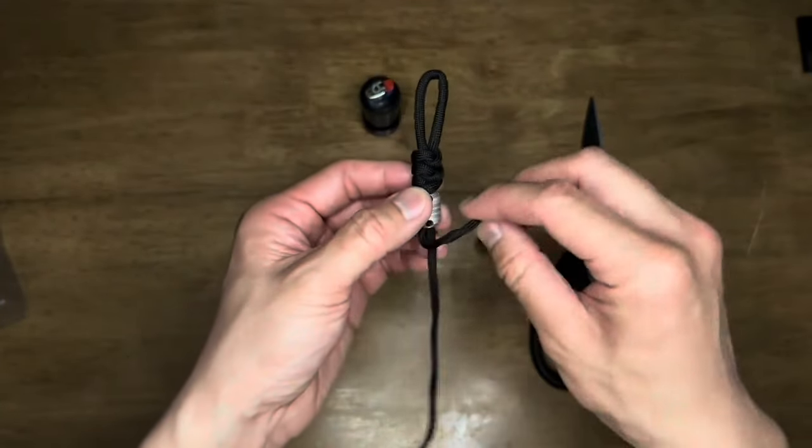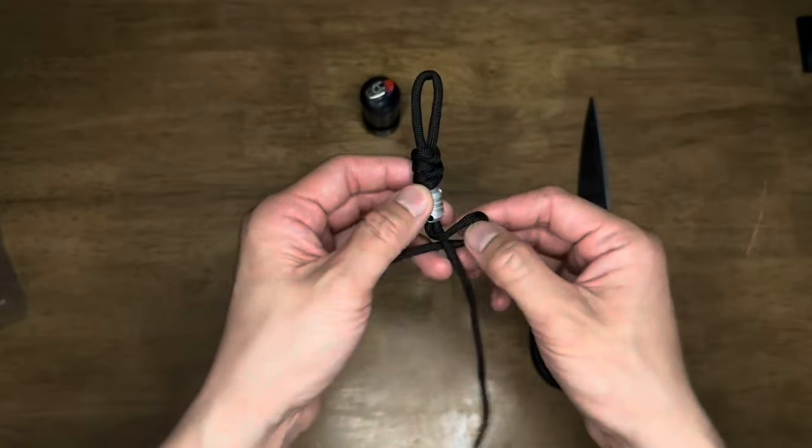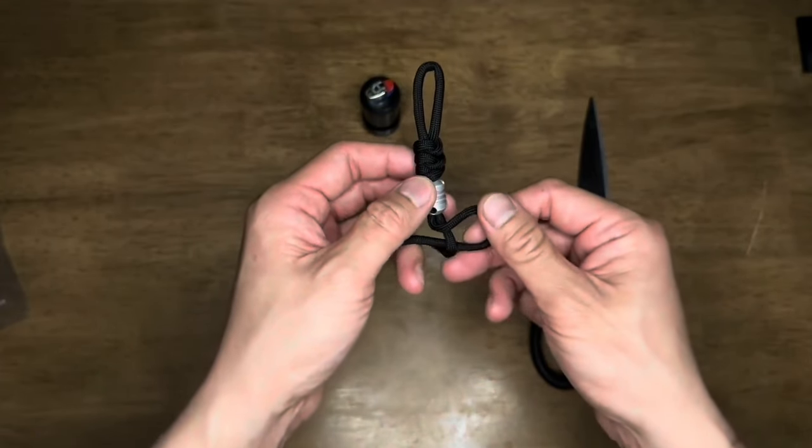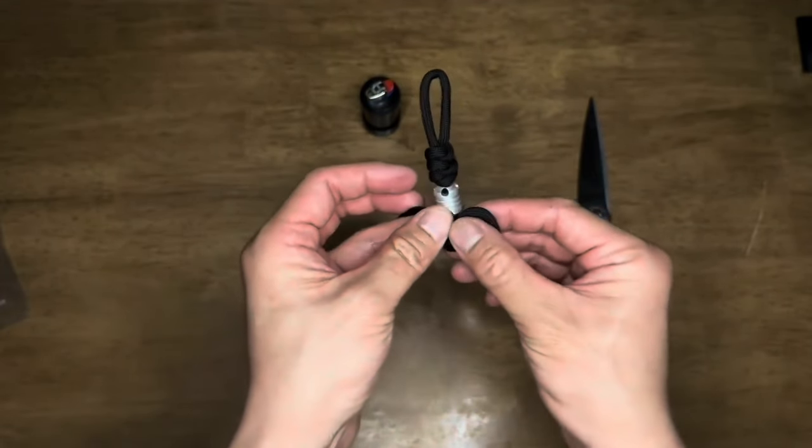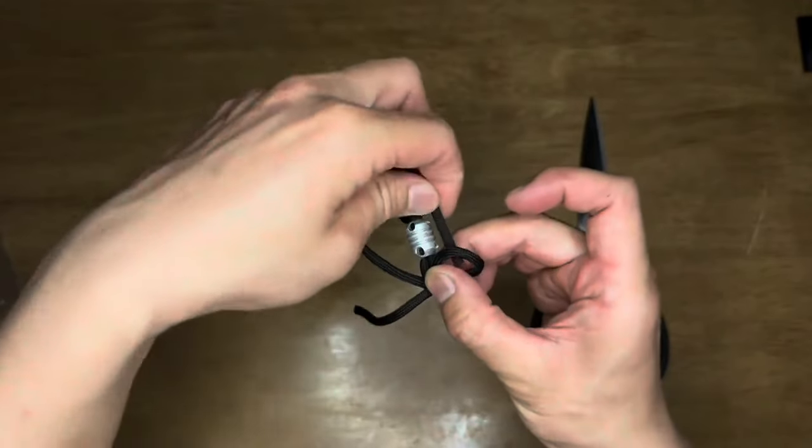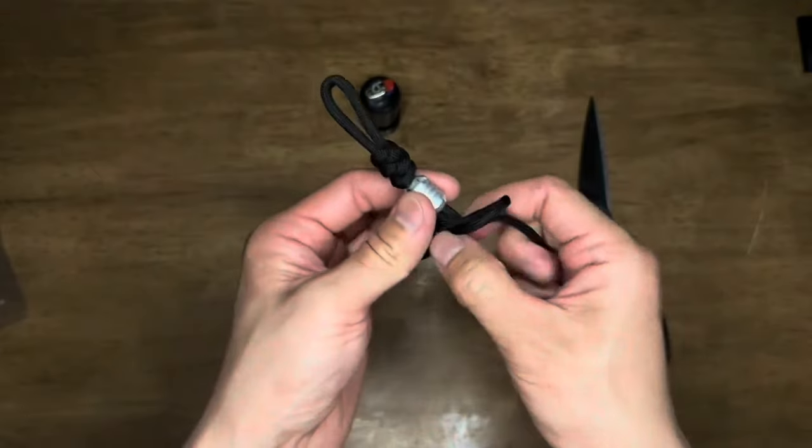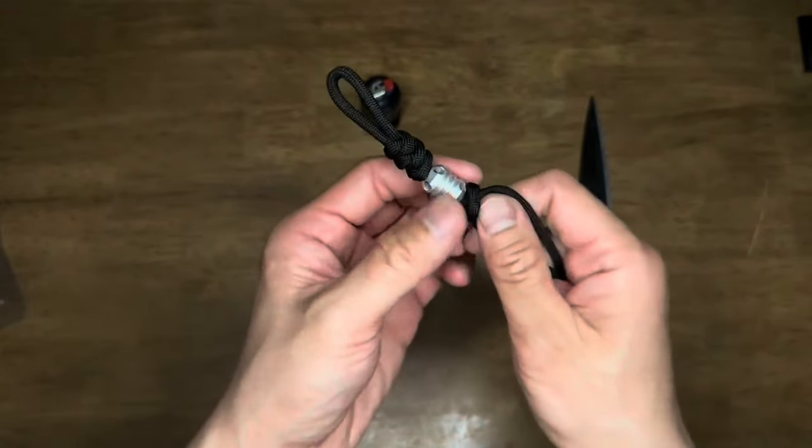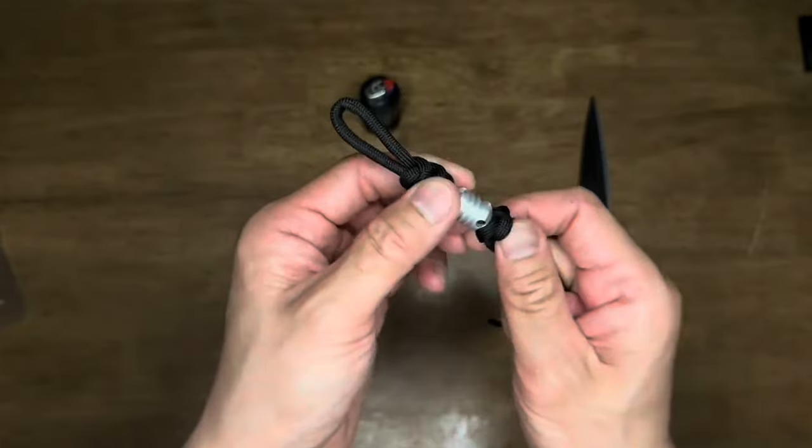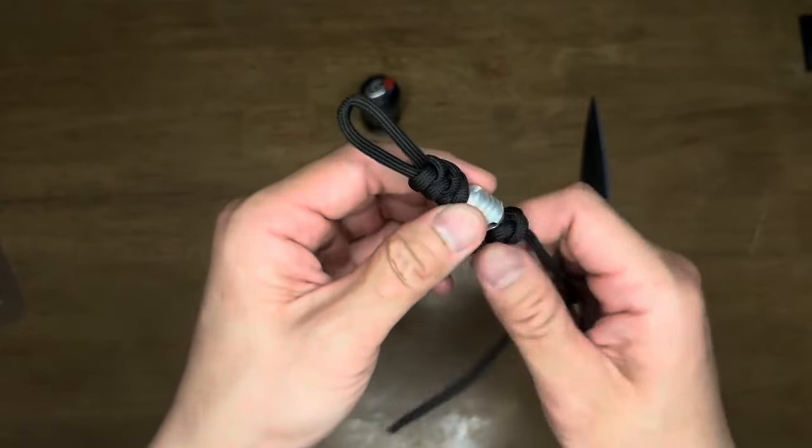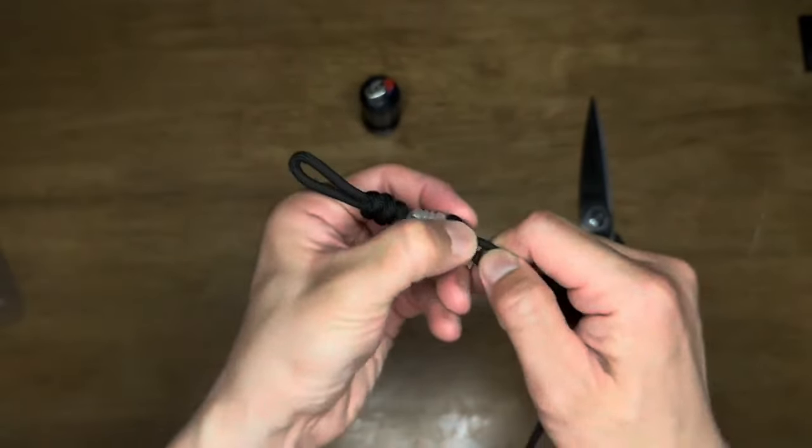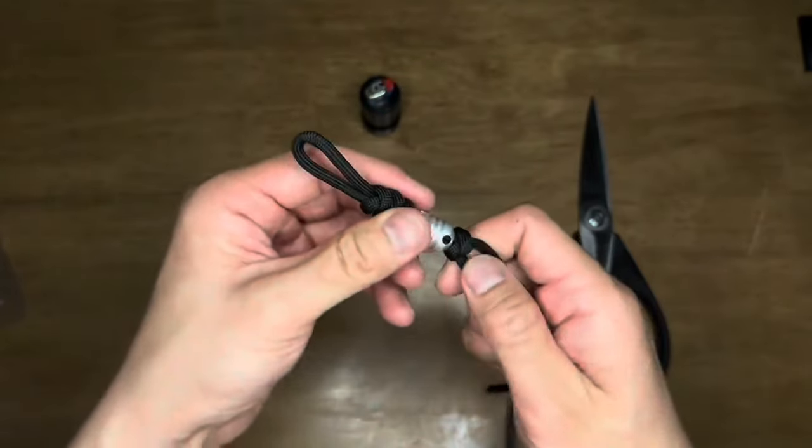Remember, left over right and then under. Take the right side, go under the left side, over through the loop you made with the left side. Tighten it up and shape it so it's nice and neat.